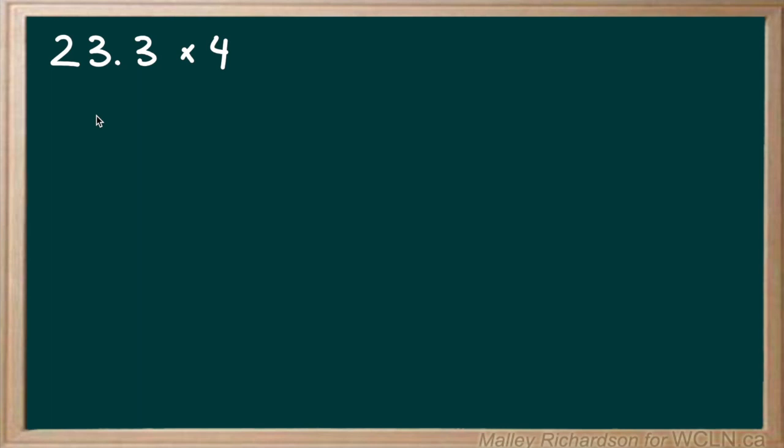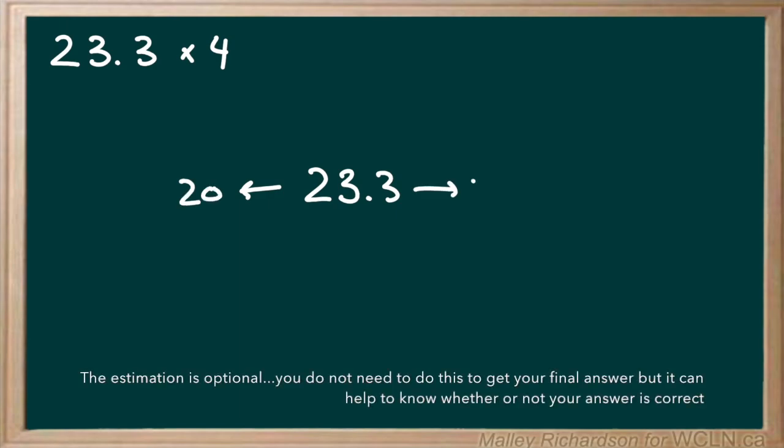To do this estimation we start with our decimal number which in this case is 23.3. So we start with 23.3 and we round up and down. Rounding down gives us 20 and then rounding up gives us 25.